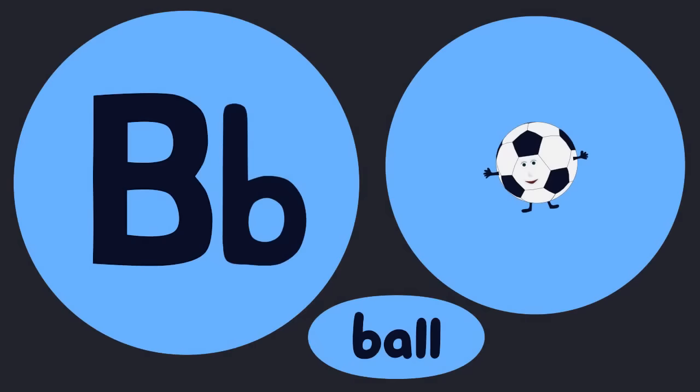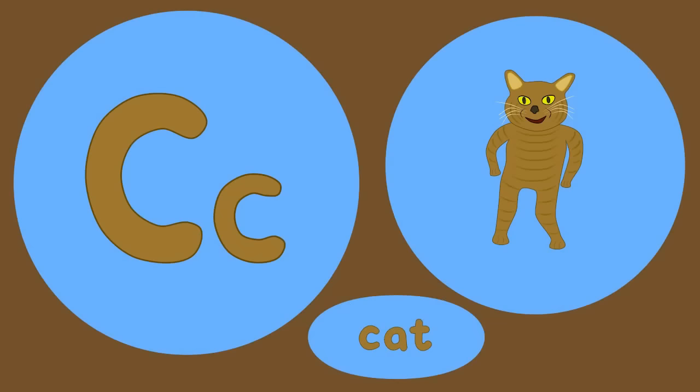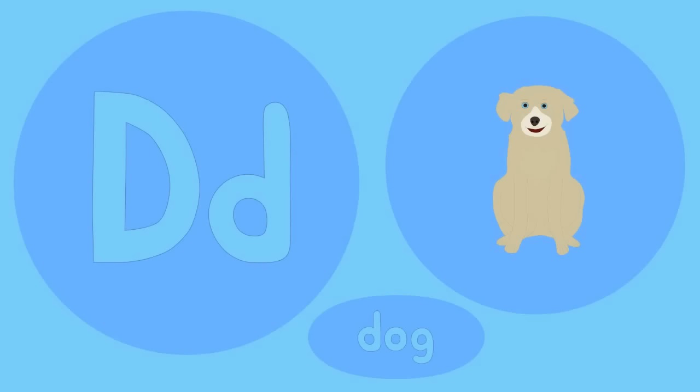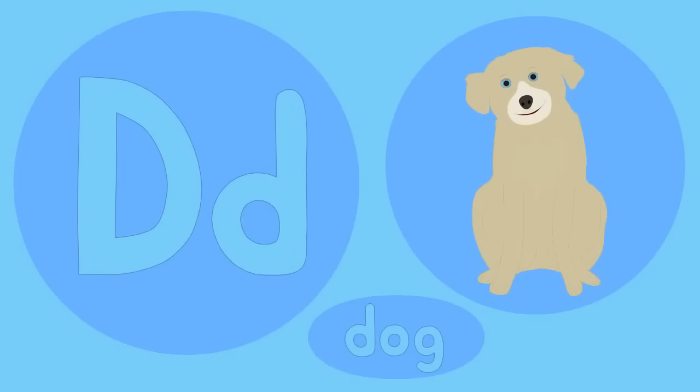A is for apple, a-a-apple. B is for ball, b-b-ball. C is for cat, c-c-cat. D is for dog, d-d-dog.